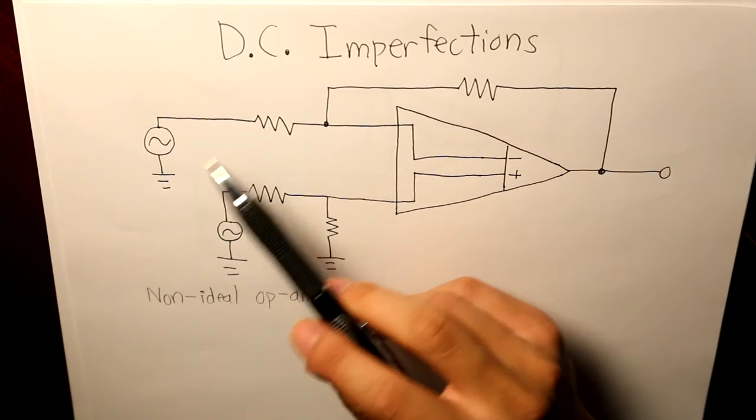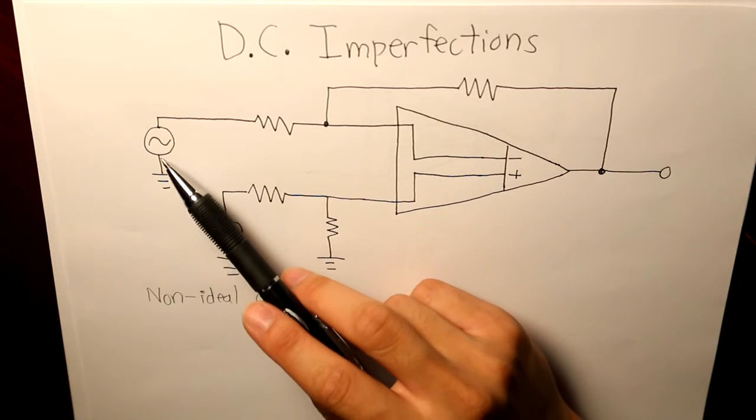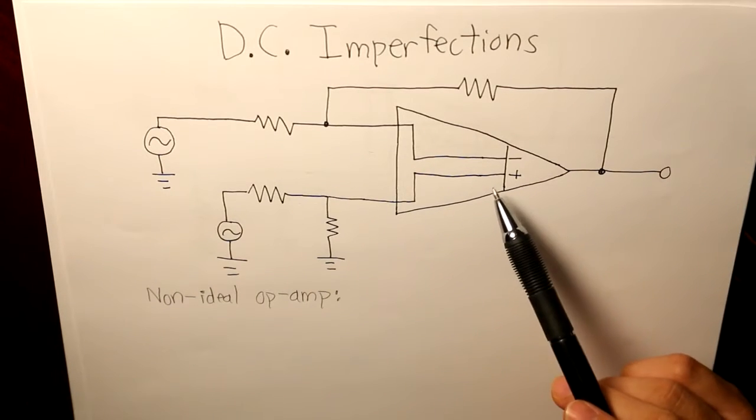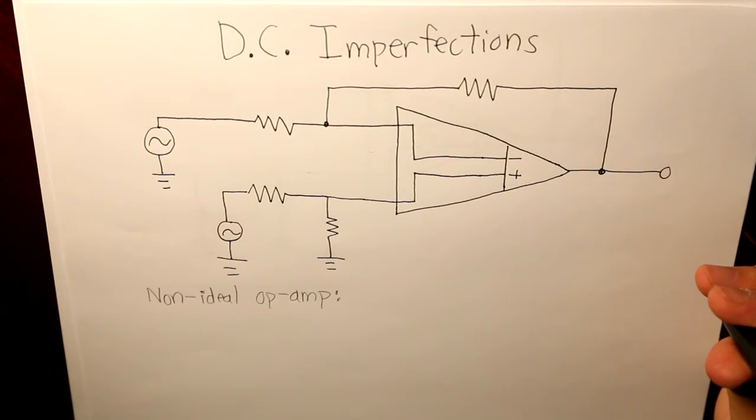So essentially in the beginning, we used to have these AC input sources connected to this op amp, and that would produce what our ideal output is going to be. But in nature and in the physical world, there's always going to be some kind of discrepancy, and that discrepancy would be some DC value of some sort that is very minimal, but has to be considered if we take into account the real world.